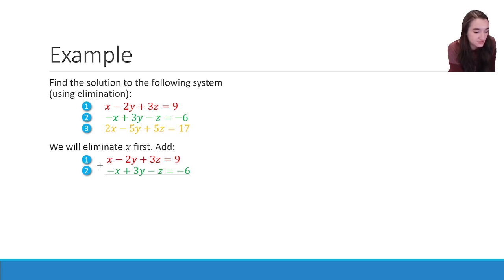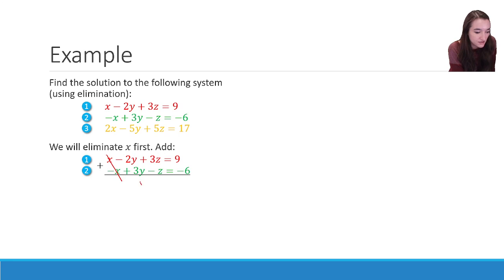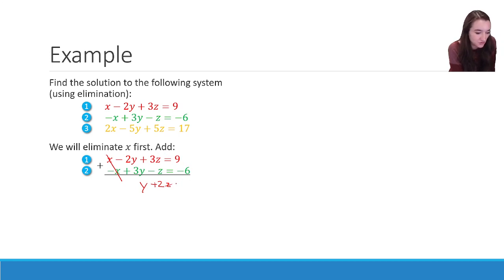Our three equations are: (1) x minus 2y plus 3z equals 9, (2) negative x plus 3y minus z equals negative 6, and (3) 2x minus 5y plus 5z equals 17. Noticing x and negative x in equations 1 and 2, adding them causes cancellation. We get y plus 2z equals 3, which we label equation 4.